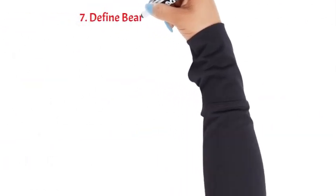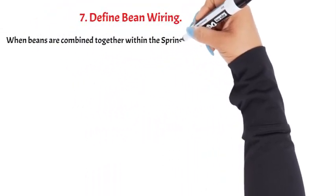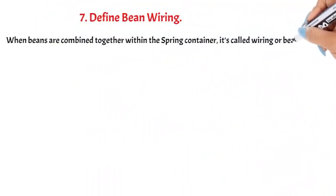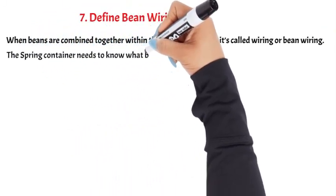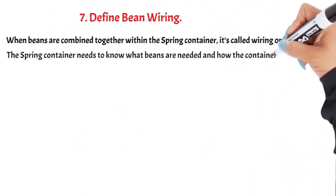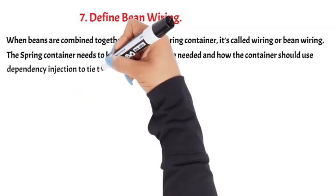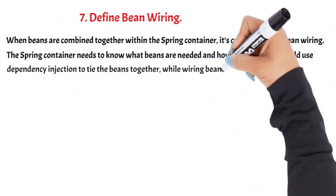Question 7: Define bean wiring. When beans are combined together within the Spring container, it's called wiring or bean wiring. The Spring container needs to know what beans are needed and how the container should use dependency injection to tie the beans together while wiring beans.